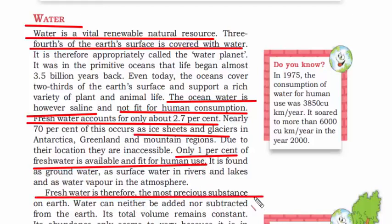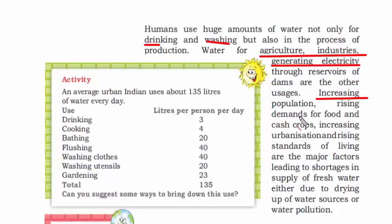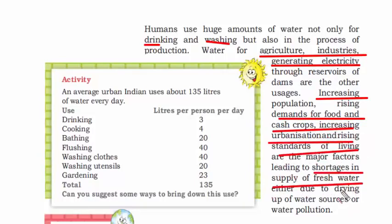Fresh water is the most precious substance on earth. Water will never disappear from the earth, but what matters is consumable fresh water. We use water for drinking, washing, agriculture, industries, and generating electricity. As population increases, we need more food production and cash crops — all of which need water. Due to urbanization and rising standards of living, there is a huge shortage of fresh water.